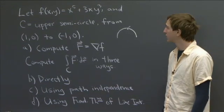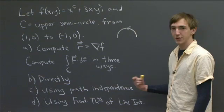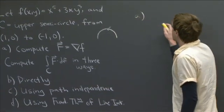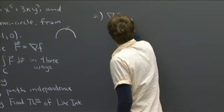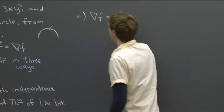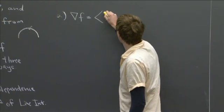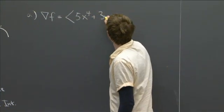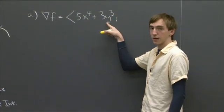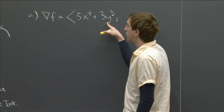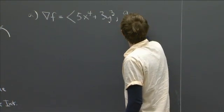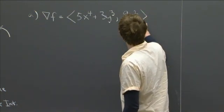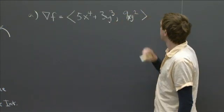Welcome back. I hope you had some luck working these problems. So let's do the easy one first, computing the gradient. So for the gradient, we just take the two partial derivatives. So we get 5x to the fourth plus 3y cubed. That's the partial derivative in the x direction. And in the y direction, we just get 9xy squared.